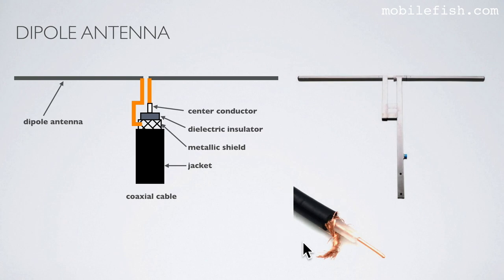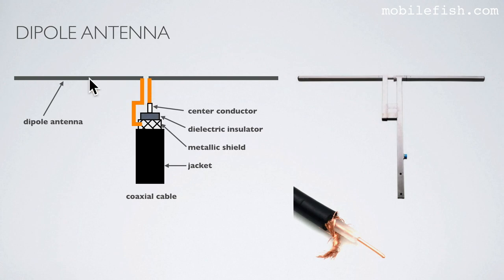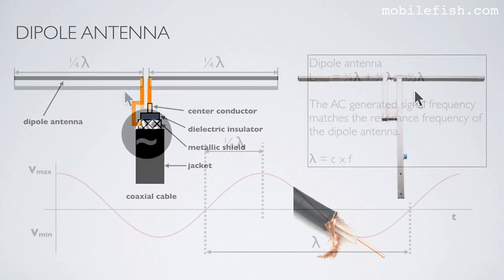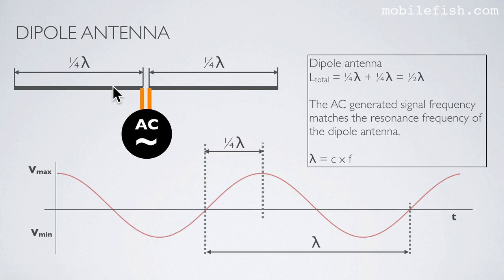This is a coaxial cable. It consists of a center conductor, a dielectric insulator, a metallic shield, and a jacket. A dipole antenna connects one element to the center conductor and the other element to the metallic shield. A dipole antenna consists of two elements, each a quarter-lambda in length, so the total length is a half-lambda.